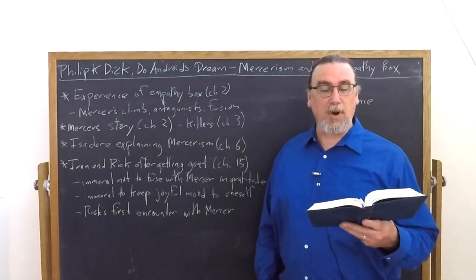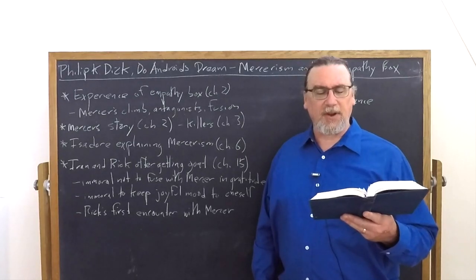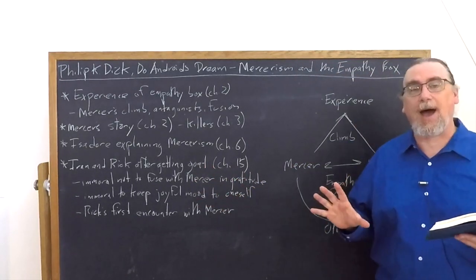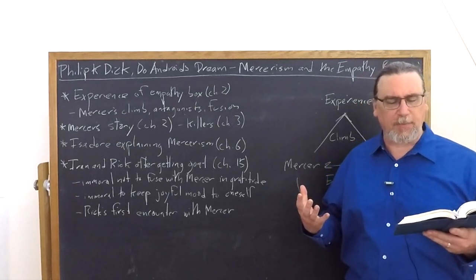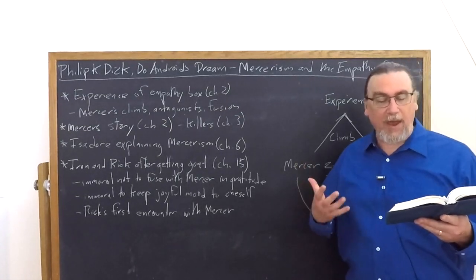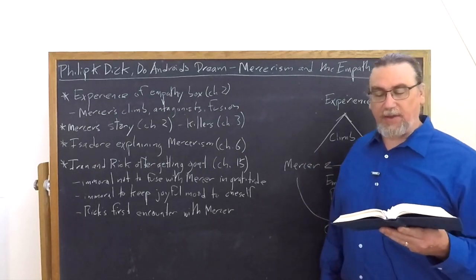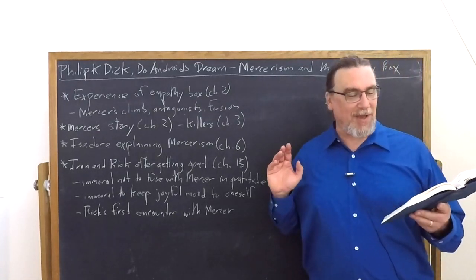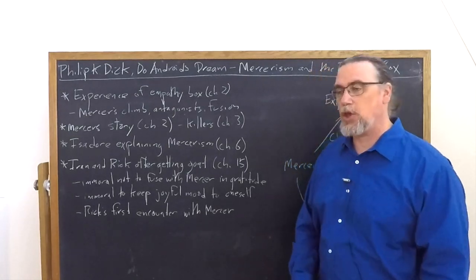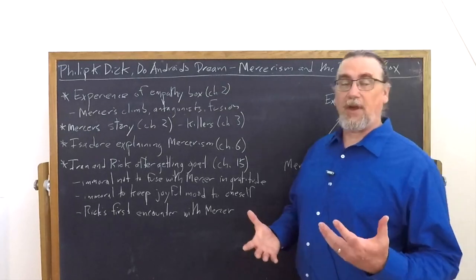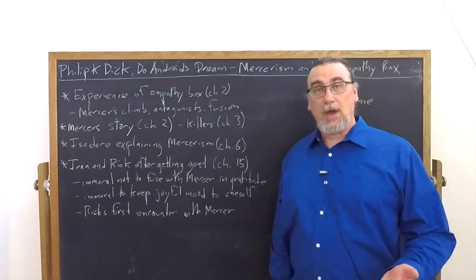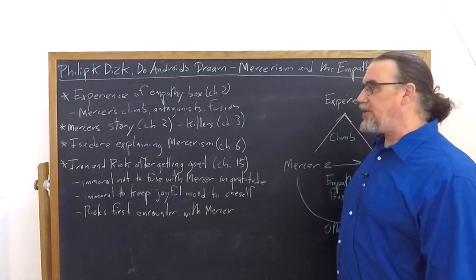'But an empathy box,' he says, stammering, 'is the most personal possession you have. It's an extension of your body. It's the way you touch other humans. It's the way you stop being alone. Everyone knows that. Mercer even lets people like me...' He broke off, but too late. He had already told her, and he could see by her face the flicker of sudden aversion. 'I almost passed the IQ test, but I'm not very special, only moderately.' 'But that's what Mercer doesn't care about.' And then Pris has a great one-liner: 'As far as I'm concerned, you can count that as a major objection to Mercerism.' So again we see the contrast between the human and the android here.